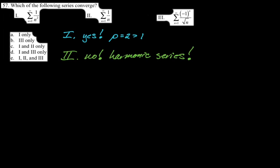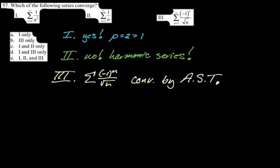And now we just need to figure out if the third one converges. The third one is alternating. So I'm thinking alternating series test. It alternates, the terms decrease in magnitude and the limit is zero. This definitely converges by the alternating series test. So we have yes, no, yes, that's one and three. I think the answer is D. All right, new problem.